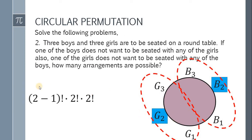Therefore, the total number of ways must be two minus one factorial times two factorial times two factorial. Simplify, we have four different ways. Therefore, meron lang tayong four ways if one of the boys does not want to be seated with any of the girls and one of the girls does not want to be seated with any of the boys.